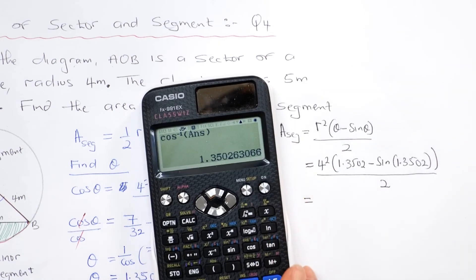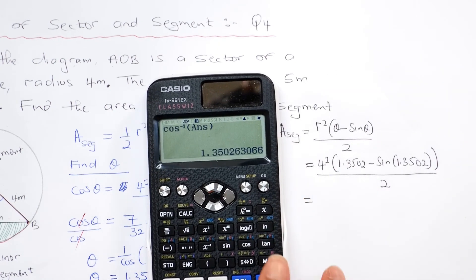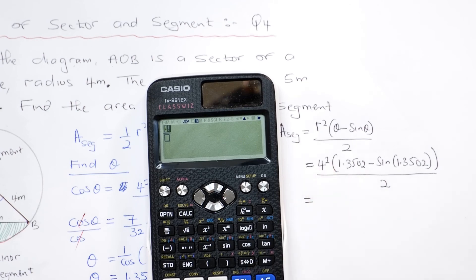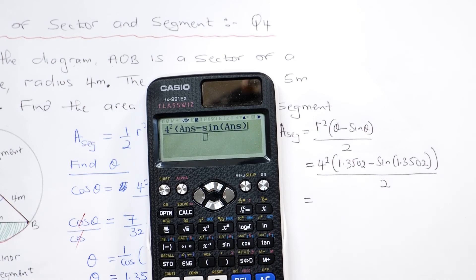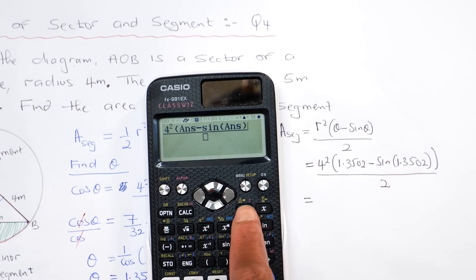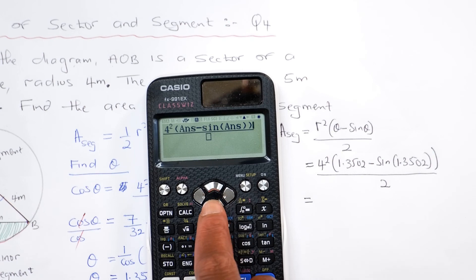If I bring the calculator back, I've already got the answer to be that. So I'm going to do the fraction key, 4 squared, open bracket, answer minus sine answer close bracket, because the answer is still 1.35, close bracket, arrow key down, divided by 2.